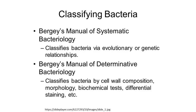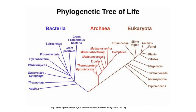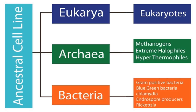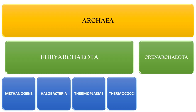Bergey's Manual of Systematic Bacteriology divides archaea into two kingdoms: Crenarchaeota and Euryarchaeota. Euryarchaeota is further divided into four major groups: methanogens, halobacteria, thermoplasms, and thermococci. Methanogenic archaeobacteria are strict anaerobes in which methane is the major metabolic end product. Sulfur may be reduced to hydrogen sulfide without yielding energy production. Cells possess coenzyme M, factors 420 and 430, and methanopterin.